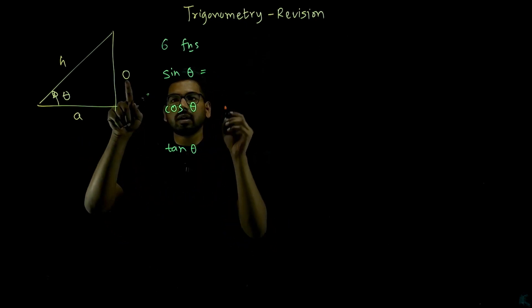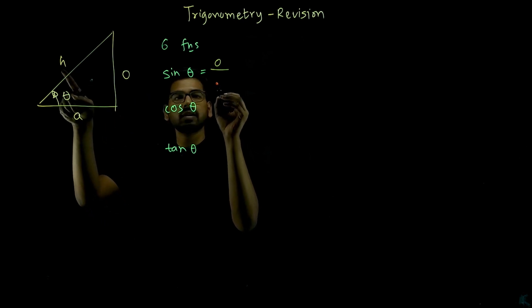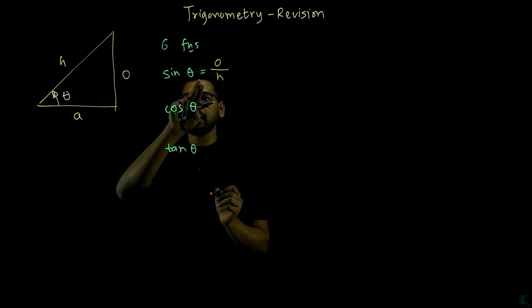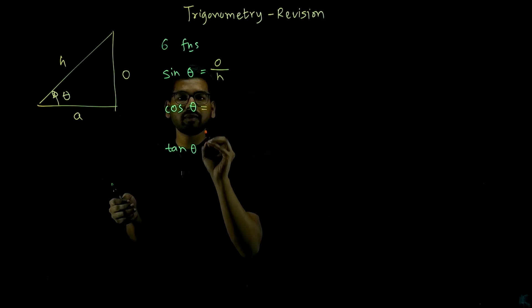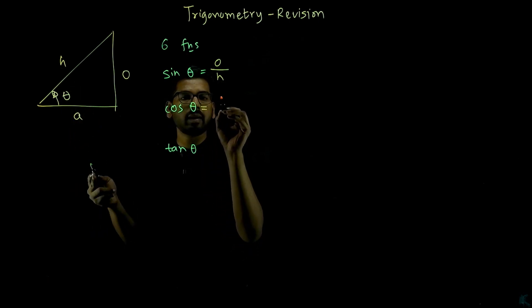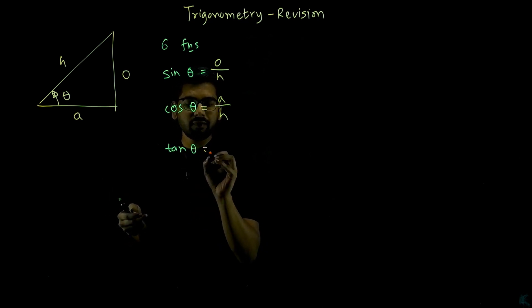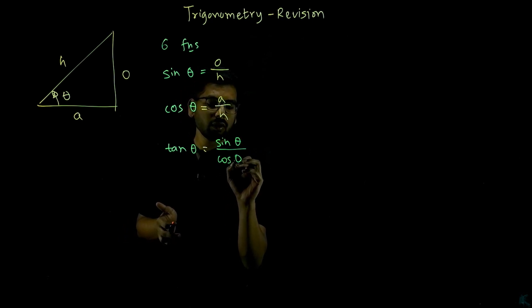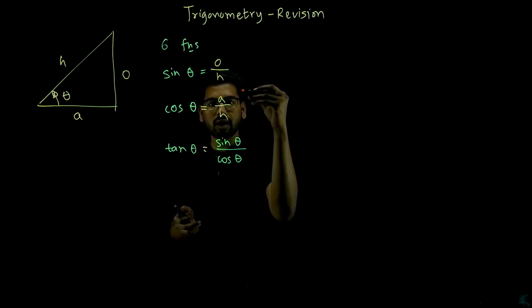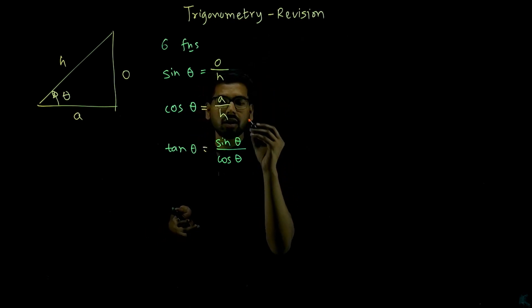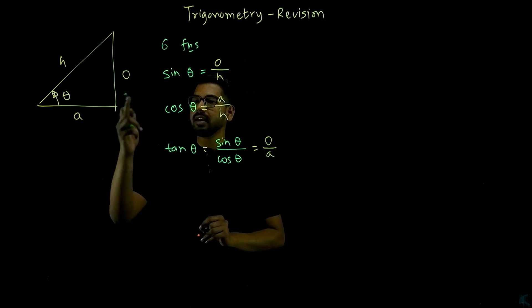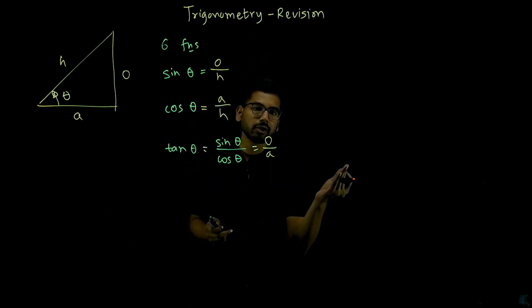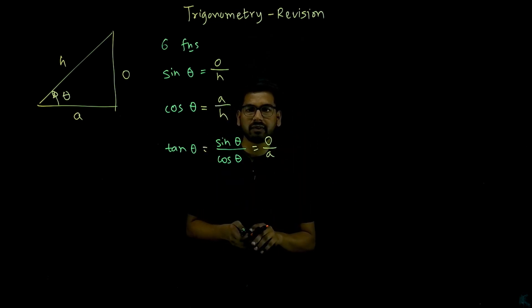Sine of theta is the length of the opposite side divided by the length of the hypotenuse. Cos of theta is the ratio of adjacent over hypotenuse. Tan of theta is the ratio of sine theta over cos theta. If you divide sine theta by cos theta, the hypotenuse cancels and you get opposite over adjacent. So these are the first three trigonometric functions.